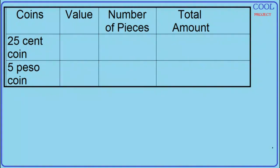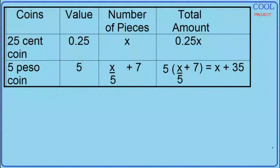The value of the 25 cent coin is 0.25 and the 5 peso coin is 5. The number of pieces: 25 cent coins is x, and 5 peso coins is x over 5 plus 7. The total amount equation: 0.25x plus 5 times the quantity (x over 5 plus 7). Multiply: 5 times x over 5 is x, plus 5 times 7 equals 35. Our equation is 0.25x plus x plus 35 is equal to 53.75.